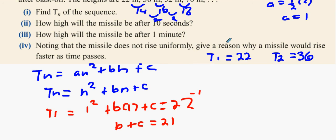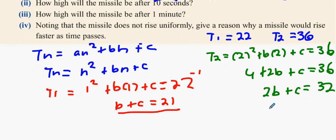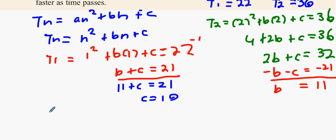What about the T2s? 2 squared plus B times 2 plus C equals 36. We're going to get 4 plus 2B plus C equals 36. So 2B plus C equals 32. And what do I do with the red equation? Minus B minus C equals minus 21. B equals 11. Put 11 back in here. 11 plus C equals 21. So what does that mean for C? C equals 10. What does it mean for the equation? N squared plus 11N plus 10.